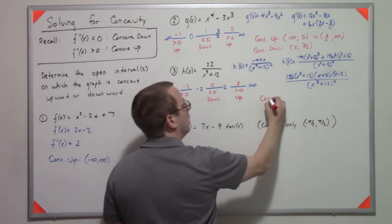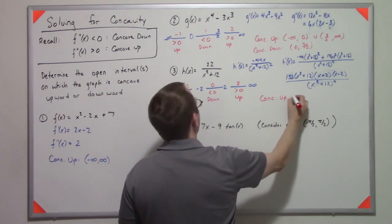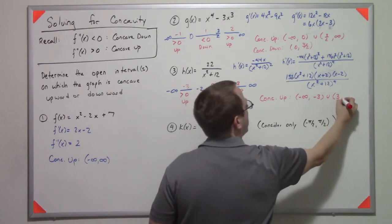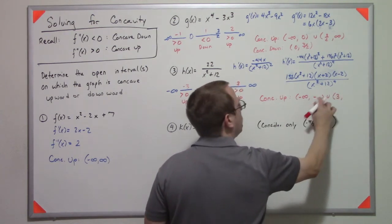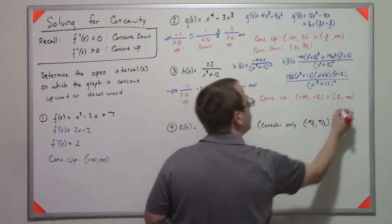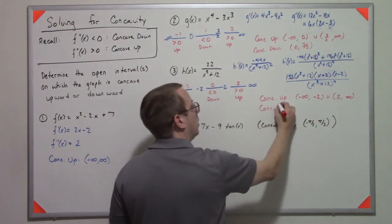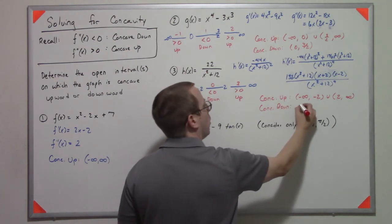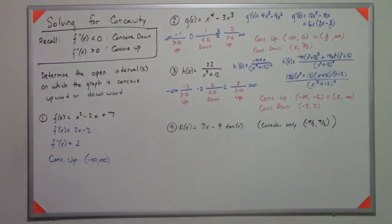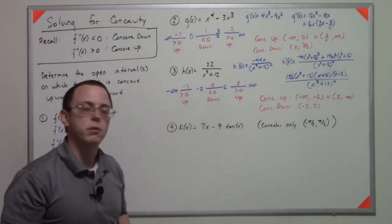So this is concave up on negative infinity to negative 3, unioned with 3, I'm sorry, negative 2, unioned with 2 to infinity, concave down from negative 2 to 2. Let me check my cheat sheet, make sure that everything looks right there. Alright, cheat sheet confirmed.